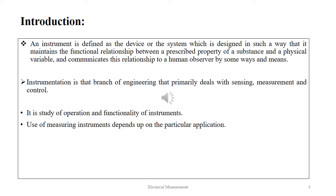Let's start with the definition of instrument. An instrument is defined as the device or the system which is designed in such a way that it maintains the functional relationship between a prescribed property of a substance and a physical variable, and communicates this relationship to a human observer by some means. Instrumentation is the branch of engineering that primarily deals with sensing, measurement and control. It is the study of operation and functionality of instruments.